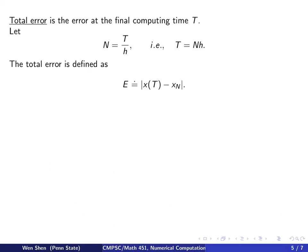Now, let's talk about the total error. So the total error is the error at the final computing time, capital T. So let's fix the total number of steps, iteration step, that's capital N, and h is the grid size, and then we have this relation, which also indicates that the total number of steps times the step size together. The product equals to the final computing time. And then the total error is defined as the exact solution at capital T minus your numerical approximation, the final step, X capital N, in absolute value.